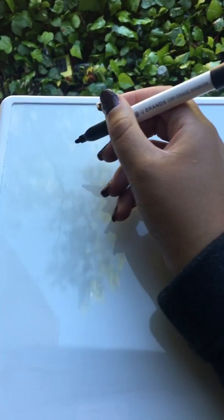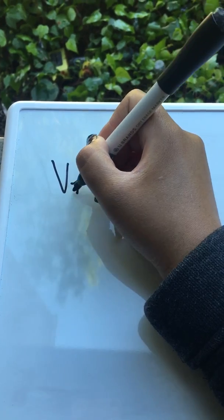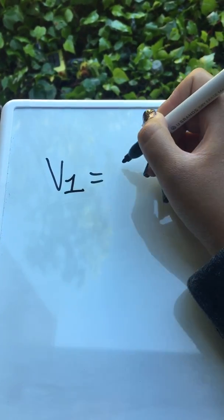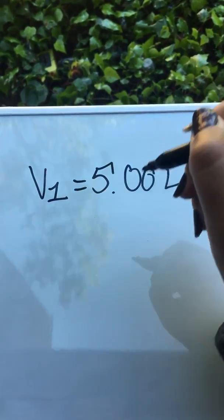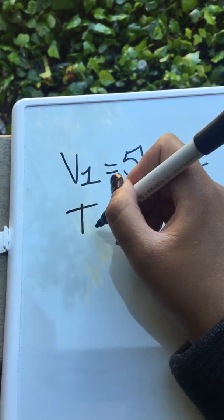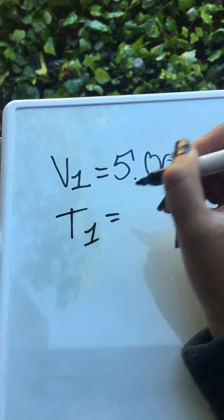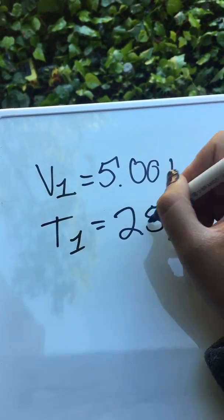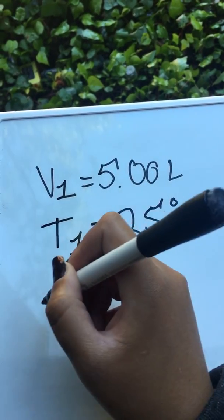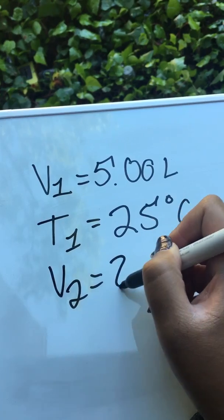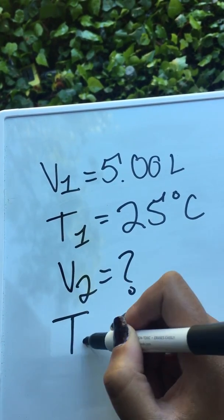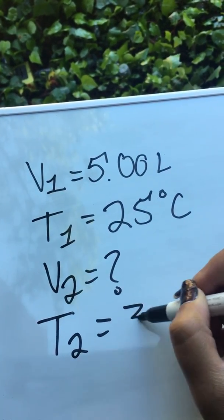As you can see on the markings that I made on the paper, this is from my study guide. You'll see that for the volume, I gave us volume one, it's five liters. The first temperature it gave us was 25 degrees Celsius, and the second volume is what we are trying to solve for. The second temperature was 35 degrees Celsius.